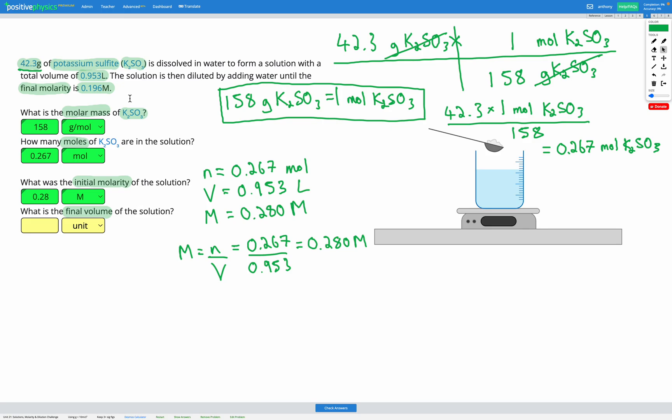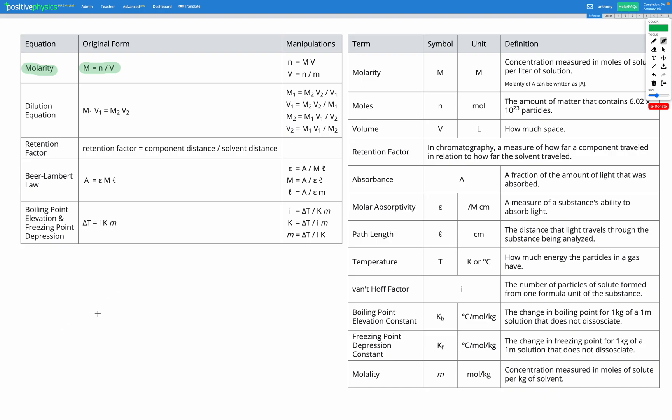Now we need to find the final volume of the solution. Let's write down our knowns. Our initial molarity M1 we calculated was 0.28 M, and our initial volume from the question was 0.953 liters. The solution is diluted by adding water till the final molarity is 0.196 M. So we know our M2, our final molarity, is 0.196 M. What we're trying to find is our final volume, V2.